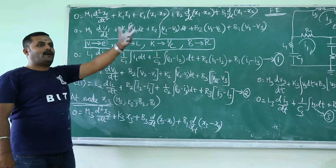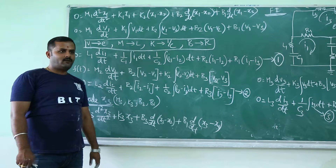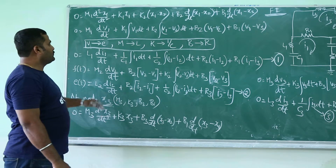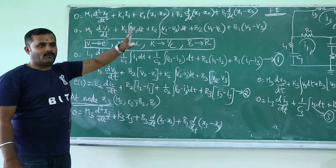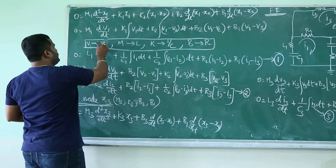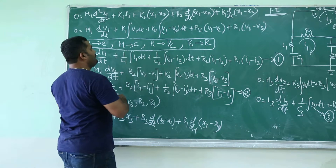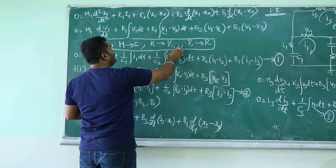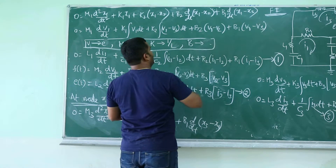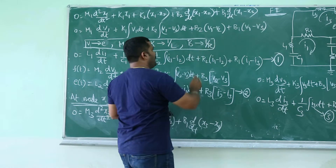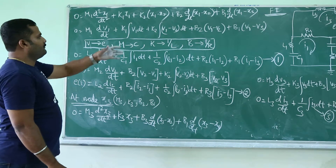So similarly, current through the capacitor is C into dE by dt. So this is what we need to replace. Earlier we found voltage across the components; now we are trying to write current through the components.